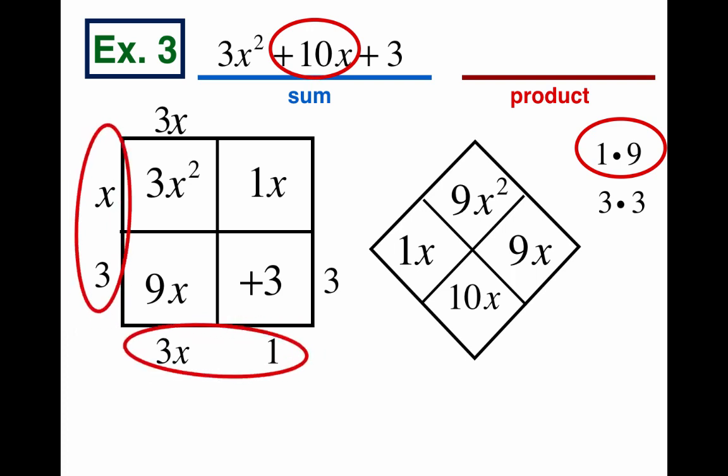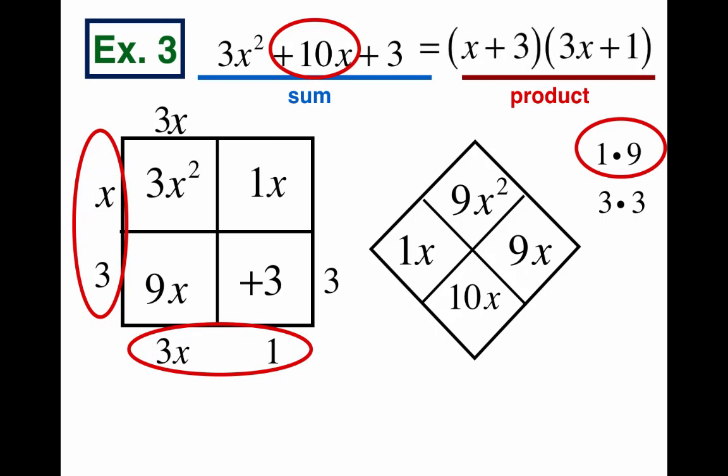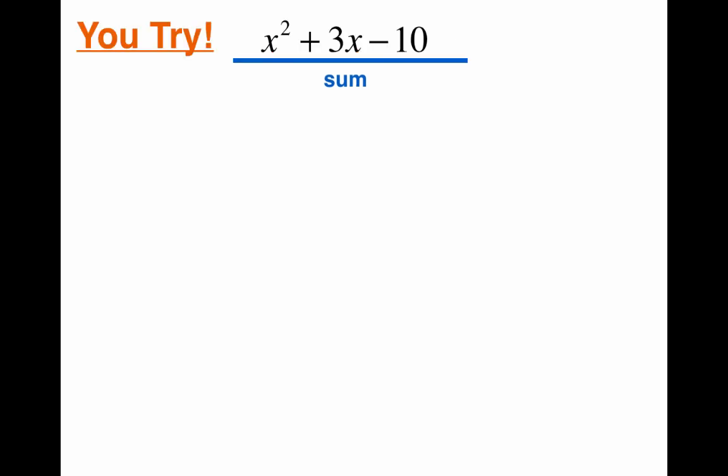So our answers are x plus 3 and 3x plus 1. There's our product. Our parentheses are going to be x plus 3 and 3x plus 1. So we write equals x plus 3 and 3x plus 1 and now we've got our sum and our product. And look at our work. It's all very nicely laid out. It's organized. We've got the rectangle. We've got the diamond. We've labeled it sum. We've labeled it product and we're good to go. Okay, so I want you to give it a try now.